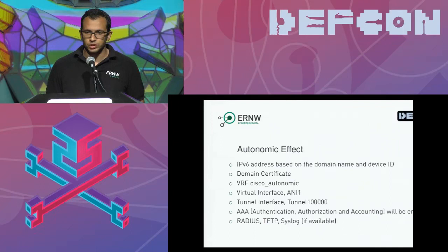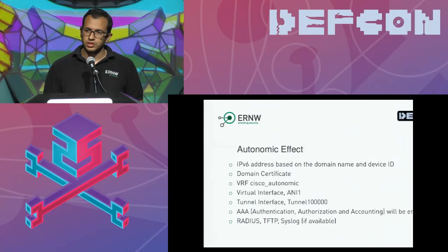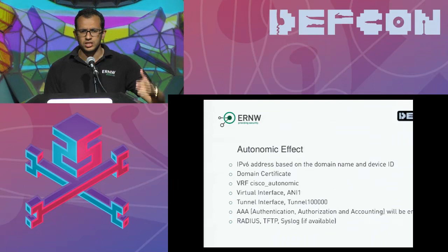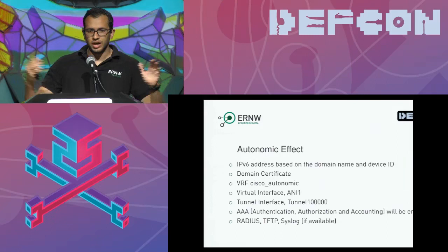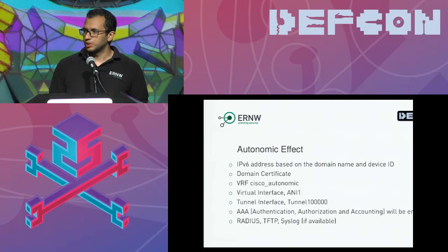If you have a RADIUS server, you can only access your device in a secure manner. If you need further configuration — such as an access list — you put it on the TFTP server and the machine grabs it automatically. We are not speaking about technology from the future; this has been on the market for at least three to four years.